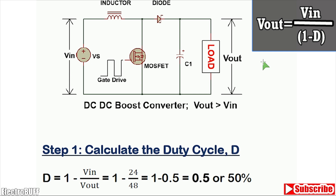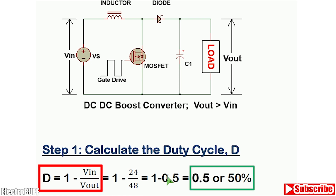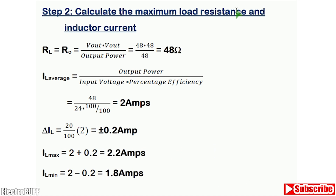The output voltage is given by the formula: V out equals V in divided by (1 minus the duty cycle). The first step is to calculate the duty cycle. D is given by 1 minus V in divided by V out. This is 1 minus 24 over 48, which gives a duty cycle of 0.5 or about 50%.